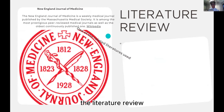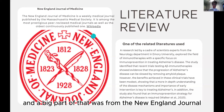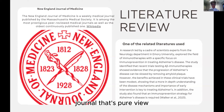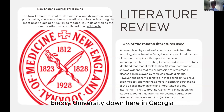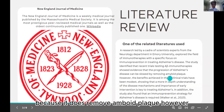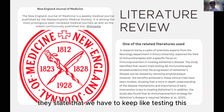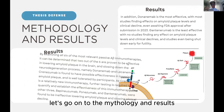My literature review was mainly a collection of case studies and studies, largely from the New England Journal of Medicine — a prestigious peer-reviewed journal. For example, I used a paper from Emory University in Georgia, which discussed different immunotherapies and showed there is actual benefit in that they do remove amyloid plaque, though further testing is needed.